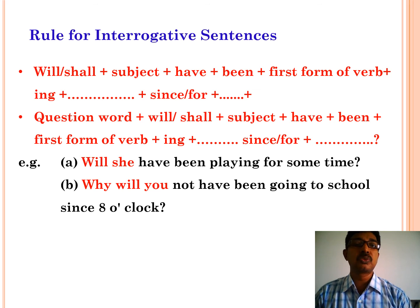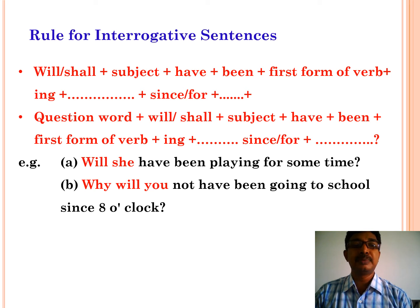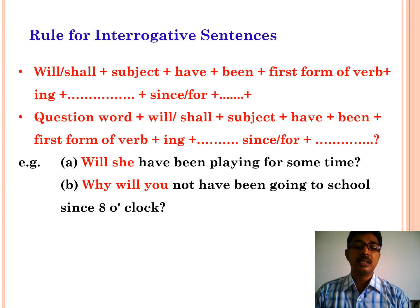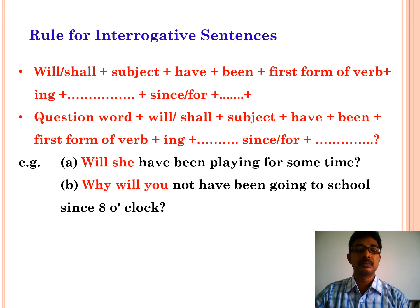Now let us see the rules for interrogative sentences in future perfect continuous tense. The structure begins with: will or shall — plus subject — plus have — plus been — plus first form of the verb plus -ing — plus since/for — plus object — plus question mark. Examples: will she have been playing for some time? Why will you not have been going to school since eight o'clock?